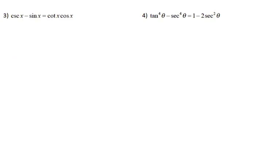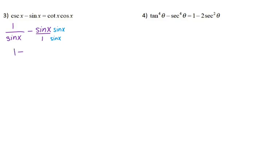For number three, I can go ahead and change the cosecant to one over sine. So I have one over sine of x minus sine of x. I have two things separated with subtraction, but my final answer has things together with multiplication. So I'm going to have to add these two fractions together. Sine of x is the same thing as sine of x over one. I need a common denominator, so I'm going to multiply by sine of x over sine of x. That leaves me with one minus sine squared of x all over sine of x.